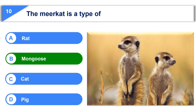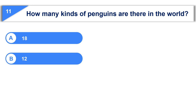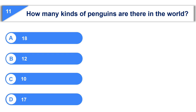The eleventh question is, how many kinds of penguins are there in the world? Option A, 18. Option B, 12. Option C, 10. Option D, 17.